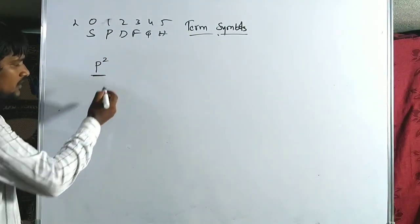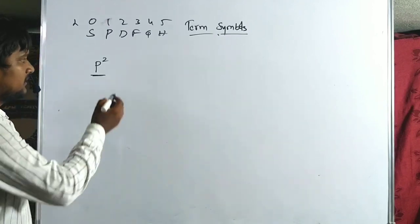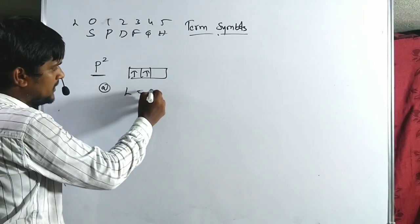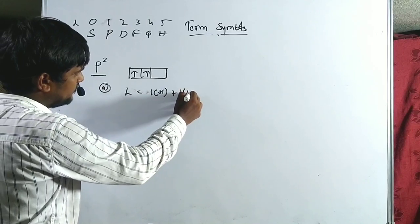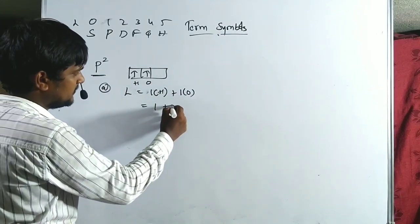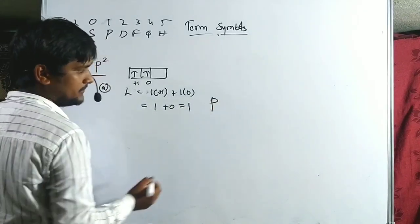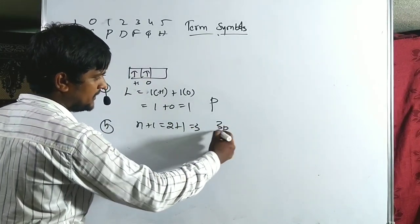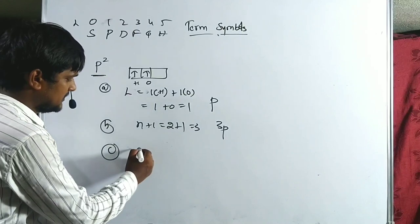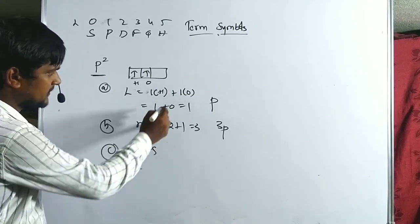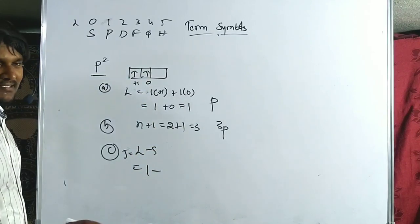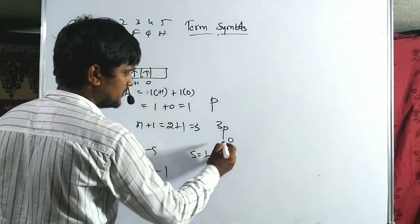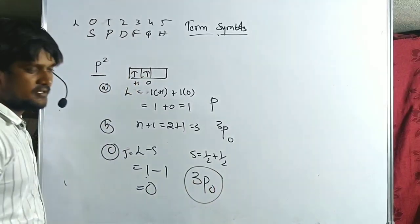For P2 configuration: two electrons with ML values +1 and 0, so L = 1+0 = 1, term is P. Spin multiplicity = 2+1 = 3, giving 3P. Less than half-filled, so J = L−S = 1−1 = 0. The ground term symbol for P2 is 3P0.